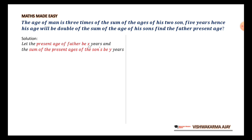Let the present age of father be X years and the sum of the present age of the sons be Y. Now, as per our first condition, father age is three times the sum of his son's age. It means the age of father is more than the son.